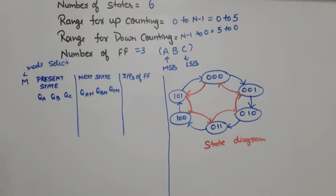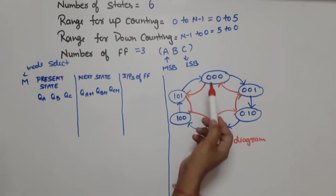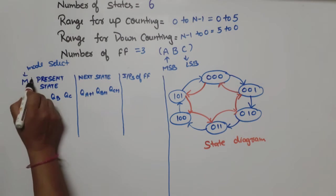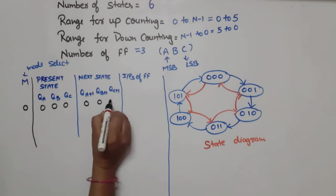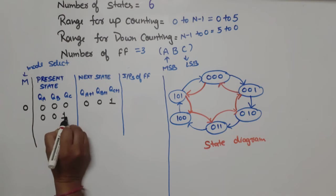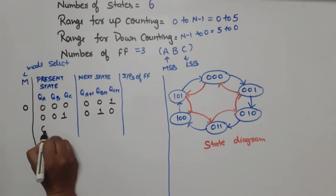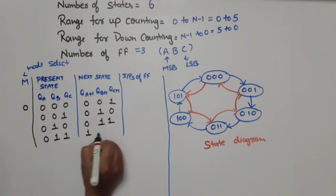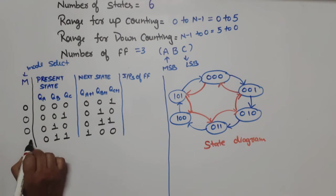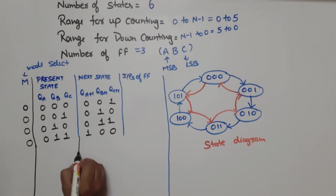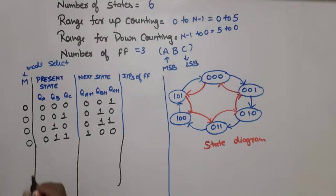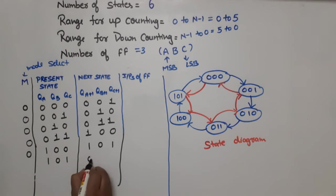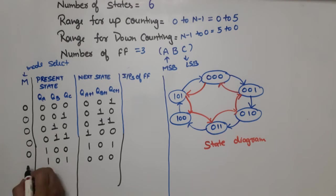Starting with up counting (M=0): present state 000 → next state 001; present state 001 → next state 010; present state 010 → next state 011; present state 011 → next state 100; present state 100 → next state 101; present state 101 → next state 000. These are the 6 states for up counting.